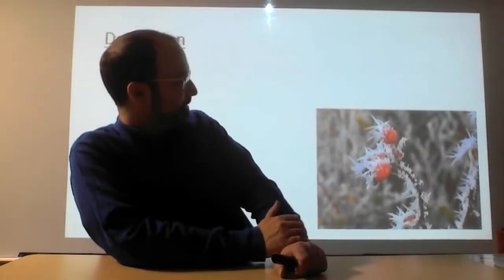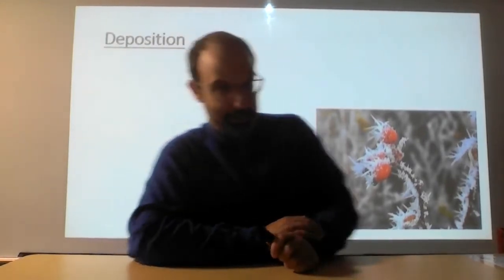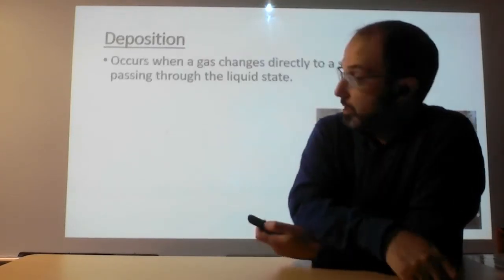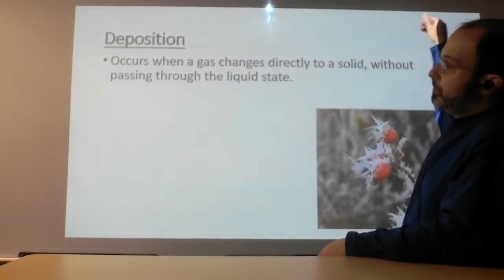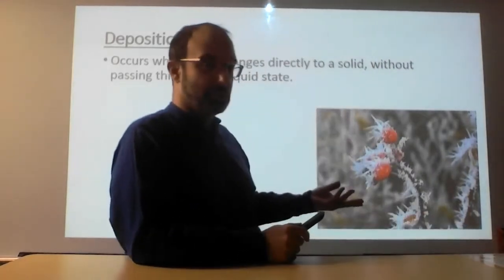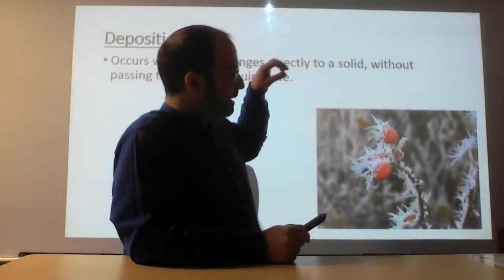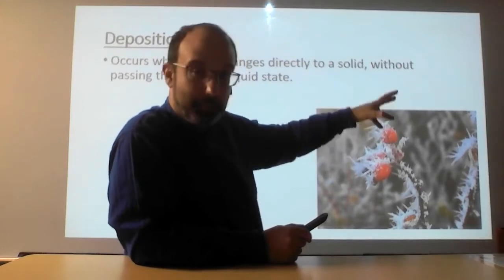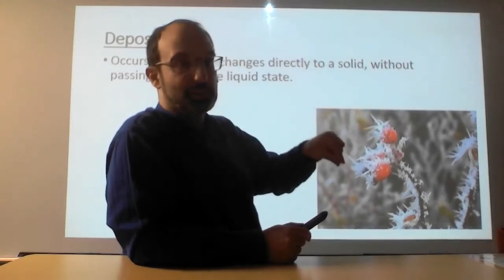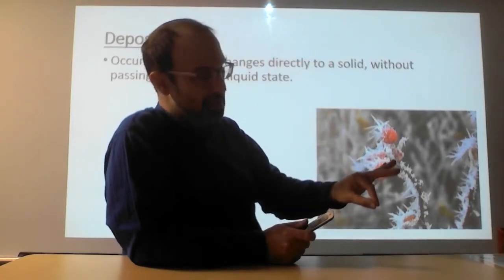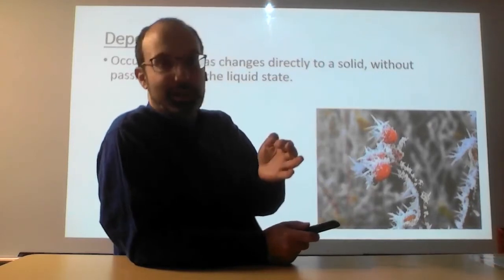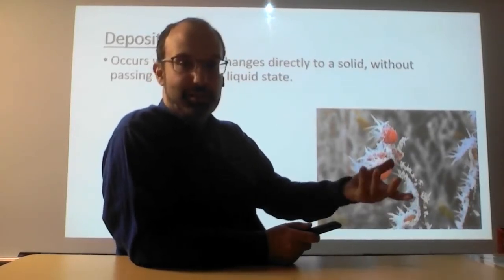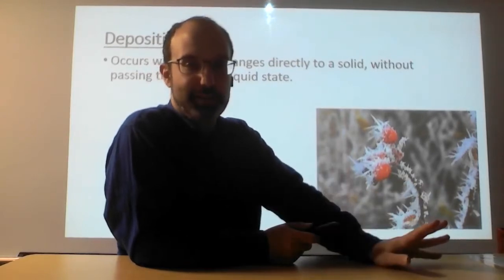Deposition — you'll see this in winter all the time. It's got the word 'deposit' in it: deposit is when you drop something off, put something down on top of something. Deposition occurs when a gas changes directly to a solid without passing through the liquid state. Here we're getting deposition of ice on a plant: the water particle touches the surface and immediately turns solid so it can't escape. It lost all of its energy when it hit the surface of the plant — all of its energy got transferred into the plant, and it sticks there.